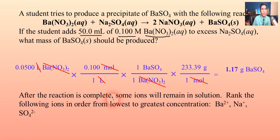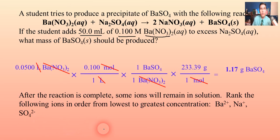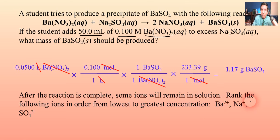Now let's answer this follow-up question: after the reaction is complete, some ions will remain in solution. Rank barium ions, sodium ions, and sulfate ions from lowest to greatest concentration. Looking at the balanced equation, sodium and nitrate are produced in aqueous form — they'll exist as ions. So I would expect to have a lot of sodium at the end, and sodium is probably going to be the highest concentration.